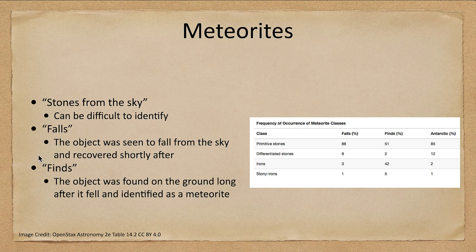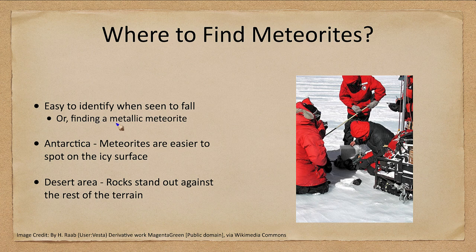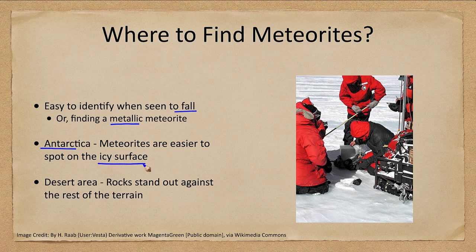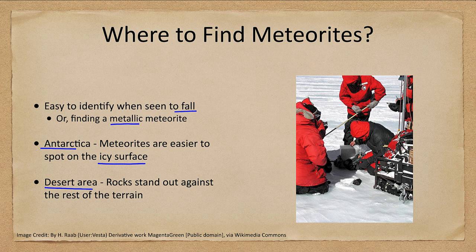Where can we find meteorites? They are easy to identify when seen to fall or when metallic. Many meteorites are found in Antarctica, where they stand out on the icy surface. They may have fallen long ago and been churned up by moving glaciers. Desert areas are another good location, where rocky material stands out against the terrain — making it more likely, though not guaranteed, to be a meteorite.